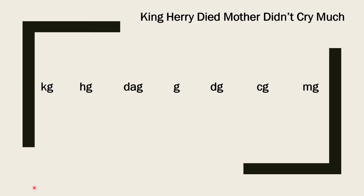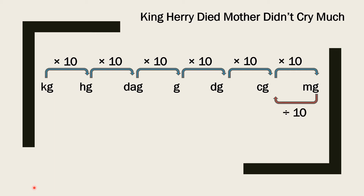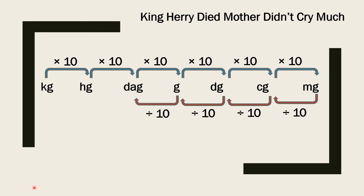Now, to convert mass units: if you need to convert higher units into lower units, multiply by 10. Kilogram to hectogram — multiply by 10; hectogram to decagram — multiply by 10; decagram to gram — multiply by 10; gram to decigram — multiply by 10; decigram to centigram — multiply by 10; centigram to milligram — multiply by 10. To convert smaller units into bigger units, divide by 10: milligram to centigram, centigram to decigram, decigram to gram, gram to decagram, decagram to hectogram, hectogram to kilogram — each step divide by 10. Using this chart you can convert these units very easily.